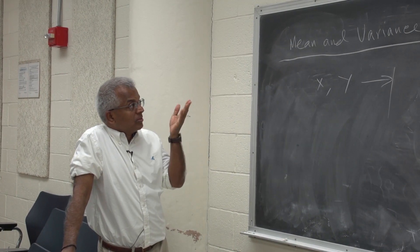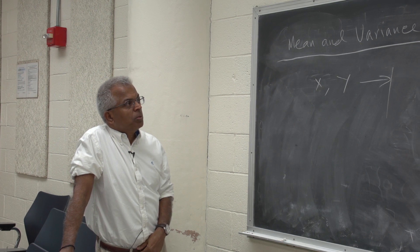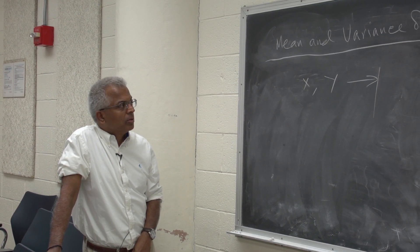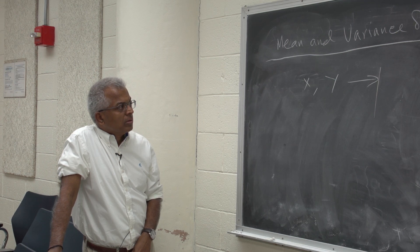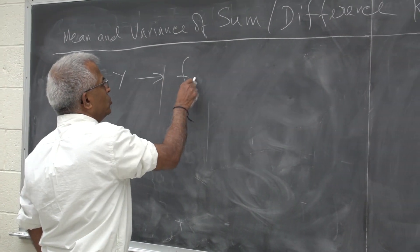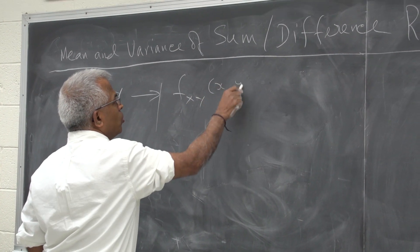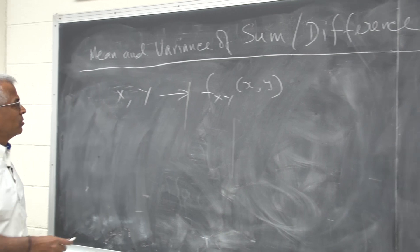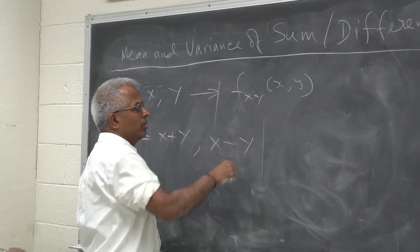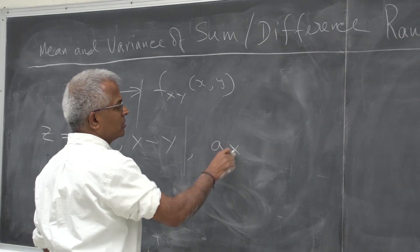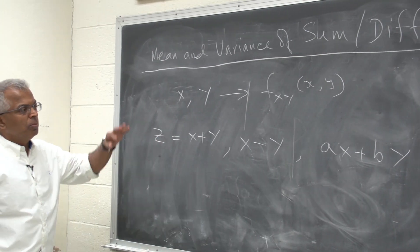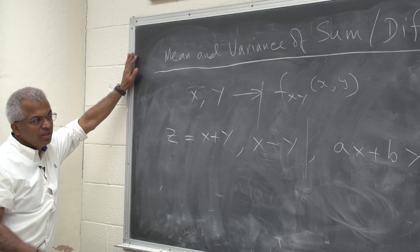This is an important topic: how to find the mean and variance of the sum and difference of two random variables. You have random variables x and y with joint density function f. The problem is: suppose we define z to be x plus y, or x minus y, or in general some linear combination ax plus by. How do you find the mean and variance of these random variables?